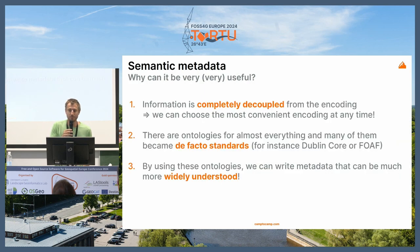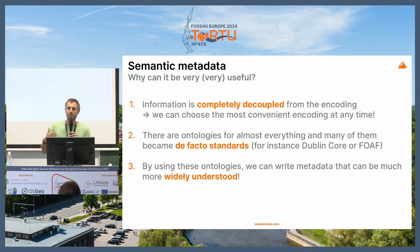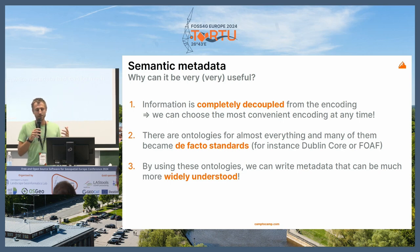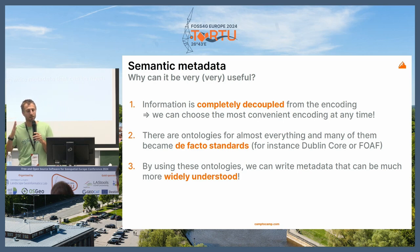So in the end, it's pretty simple to understand. Why is it useful? Because we already have a lot of ontologies to describe things that exist, like Dublin Core or FOAF to design persons — everything already exists and they've become de facto standards. What's interesting is that this has existed on the web for a long time. But when we try to describe metadata in a more complex geographical way — for instance with ISO — we're actually cutting the bridge between the rest of the internet and the web.